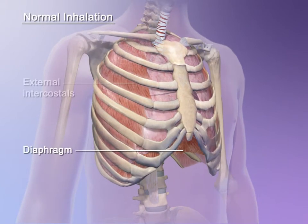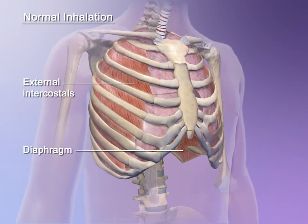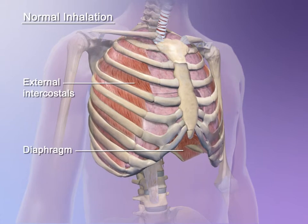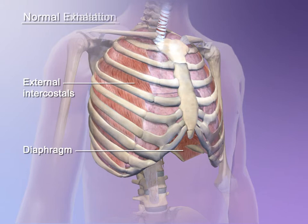During normal inhalation, the diaphragm and external intercostal muscles contract and the rib cage elevates. As the volume of the lungs increases, air pressure in the lungs drops below atmospheric pressure and air rushes in.